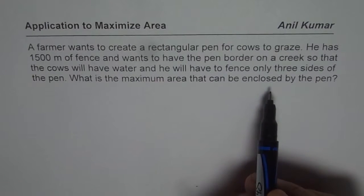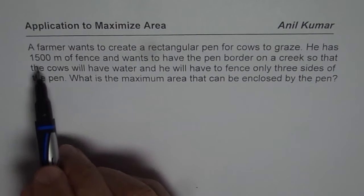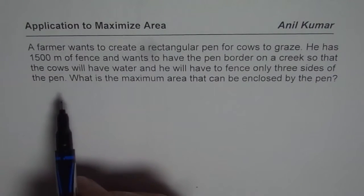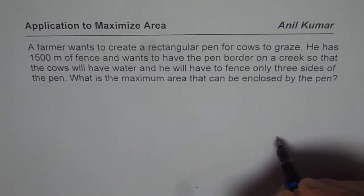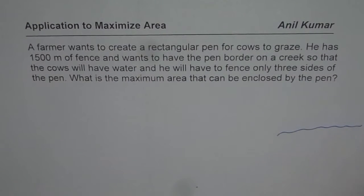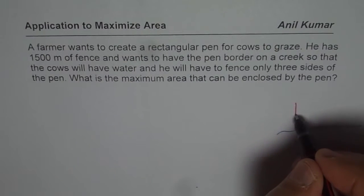So in this particular case, we know the perimeter. That is the length of the fence. And this fence will go on three sides. Let's say that is the creek for us. And let us say the fence is placed kind of like this.